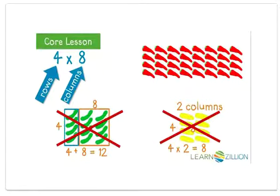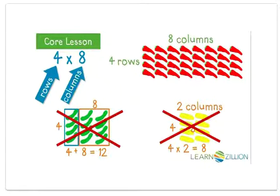How about the red peppers? This array has four rows with eight columns — four rows with eight peppers in each row. That's the correct array for four times eight, and it shows us that four times eight equals 32, because there are 32 peppers in the array.